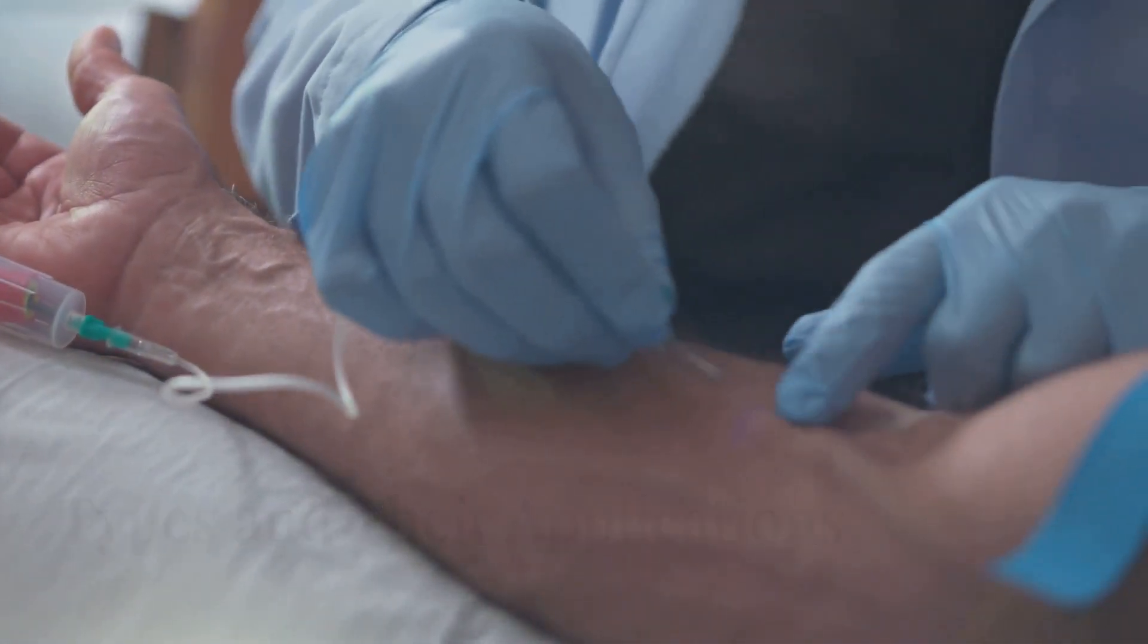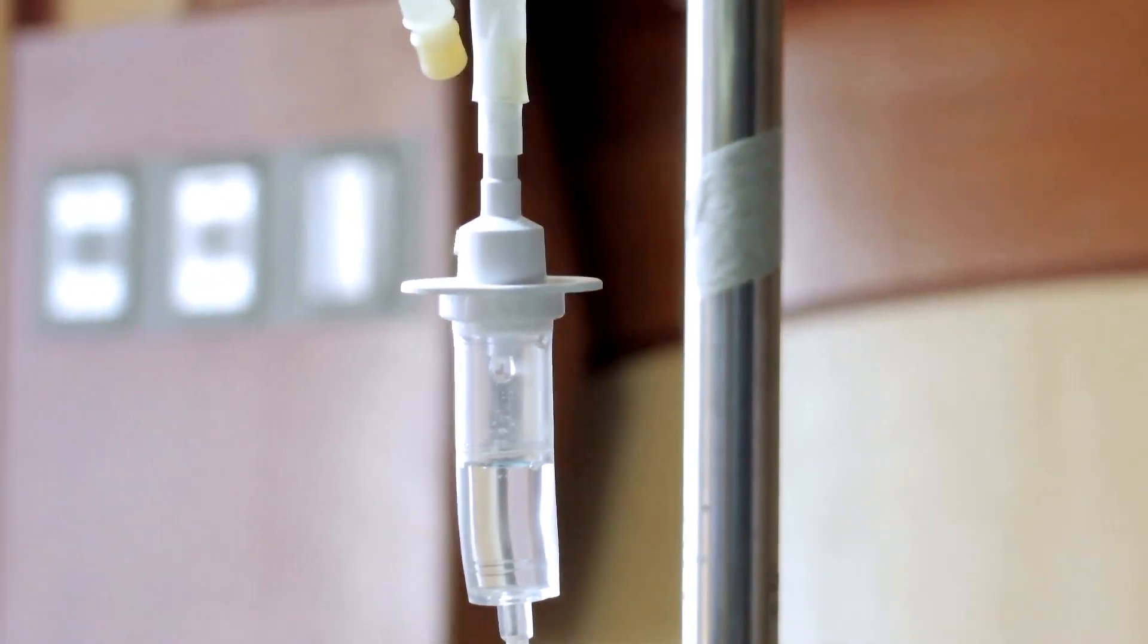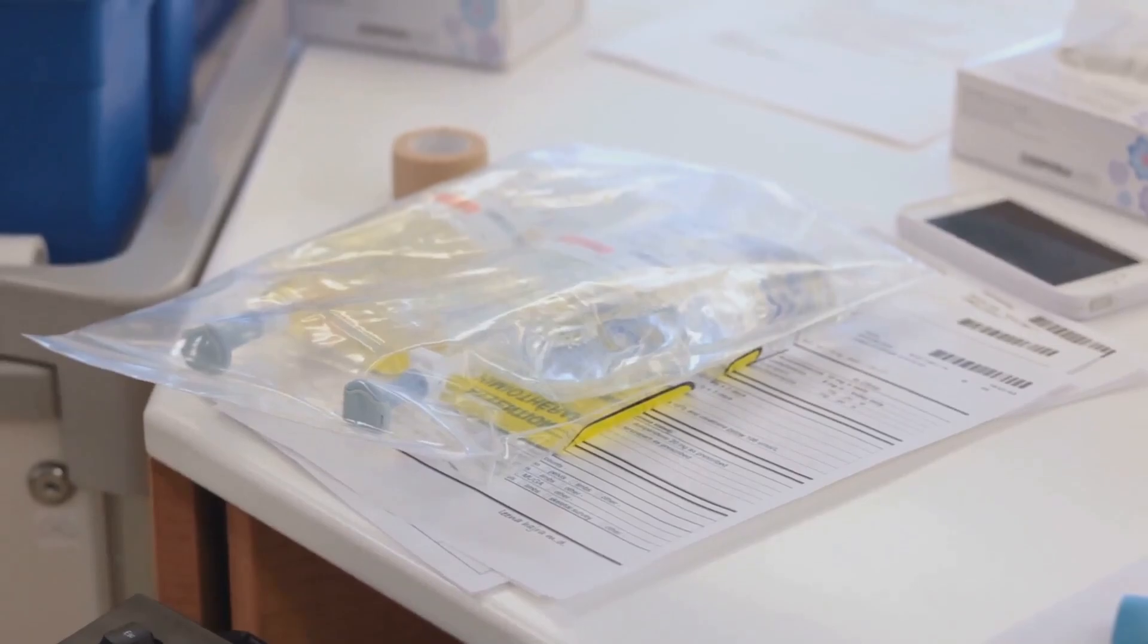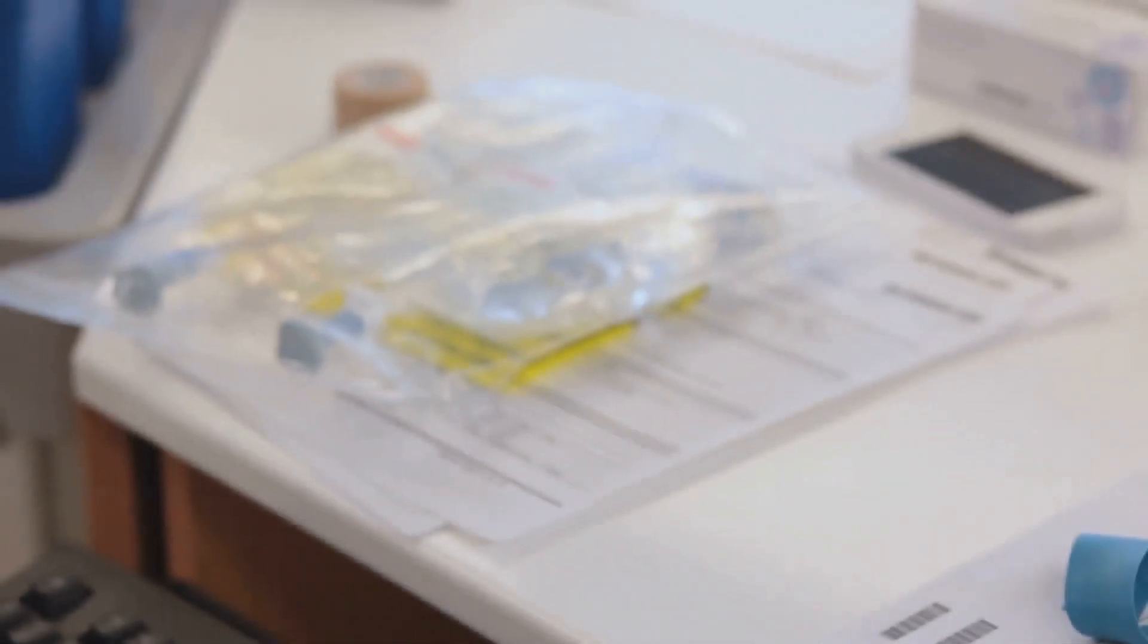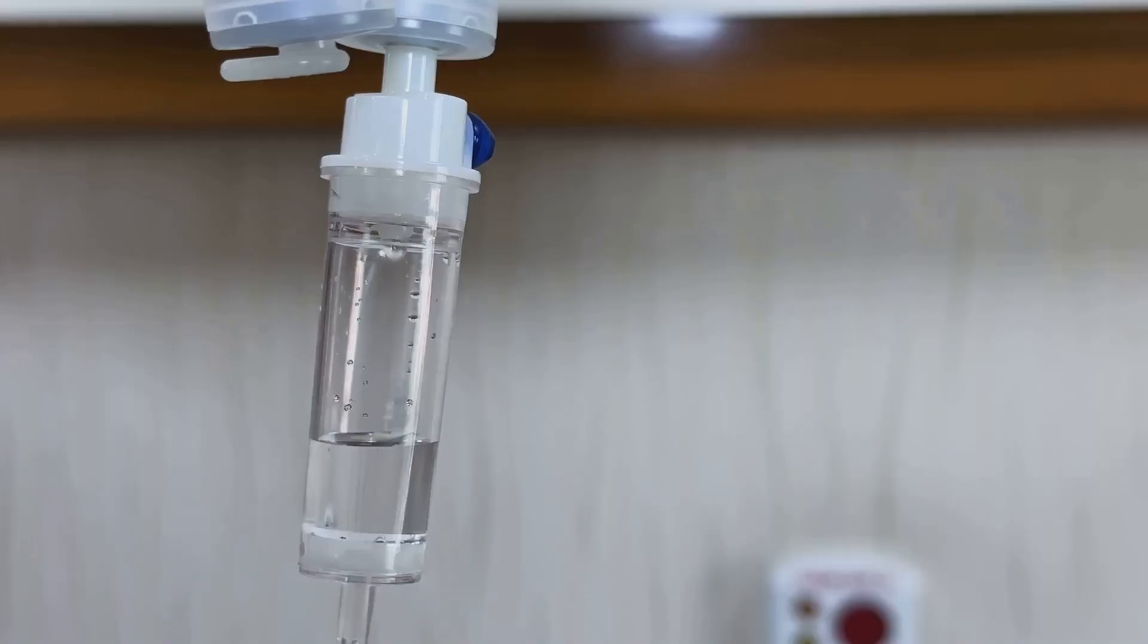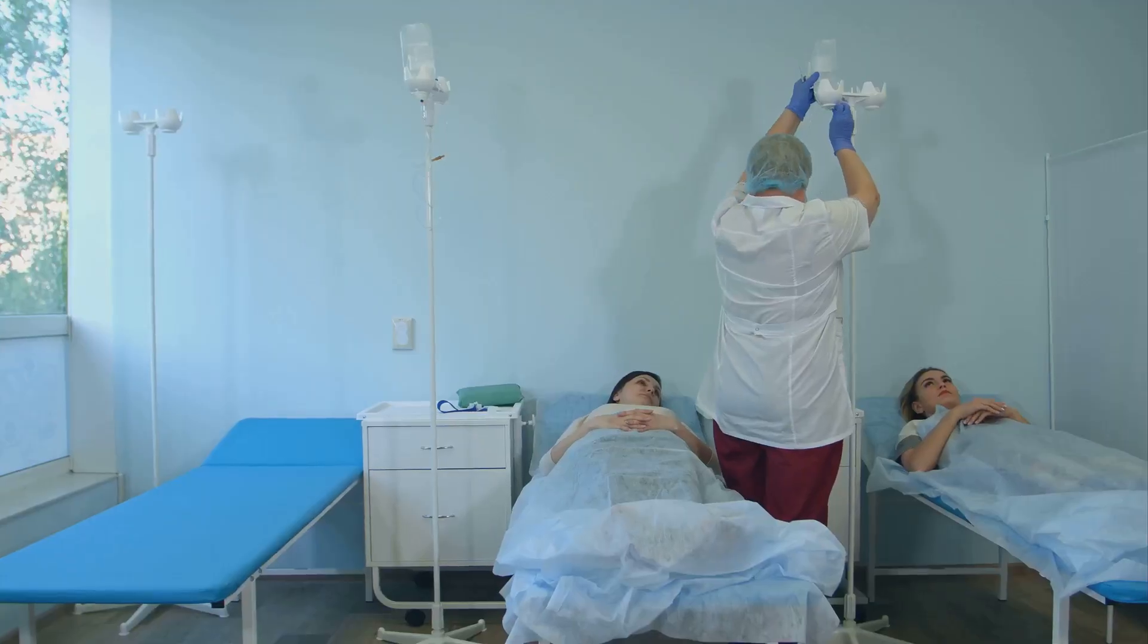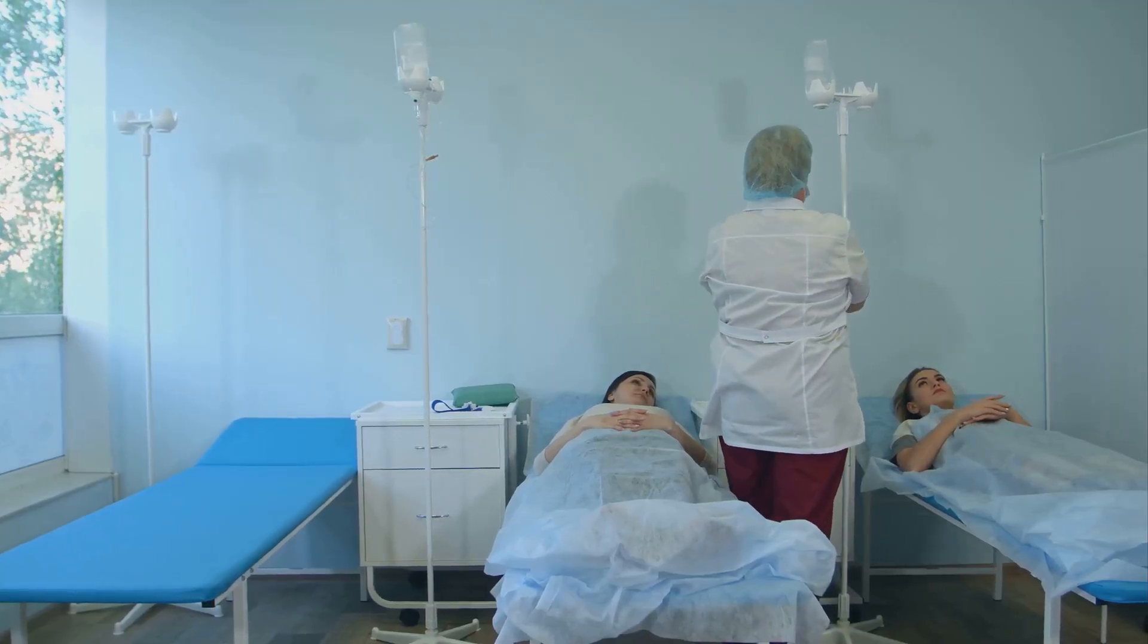Now that you've mastered the art of cannulation, let's talk about the fluids we deliver through these lifelines. Understanding the different types of IV fluids and their uses is essential for any aspiring ODP. The most common type you'll encounter is normal saline, also known as 0.9% sodium chloride. It's like giving the body a refreshing drink of salt water, helping to replace lost fluids and electrolytes.